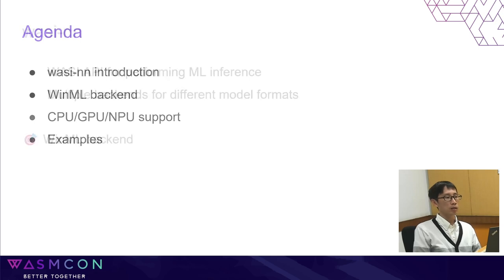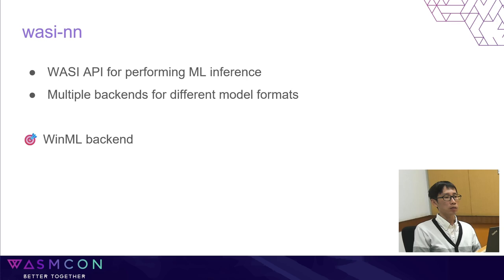WCN is WebAssembly System Interface for Neural Network that defines a set of machine learning inference APIs for WCN applications. With these APIs, WCN just needs to call a few simple APIs to load a model, feed the input data. Then the WCN runtime will choose a backend to run the inference and return the result.